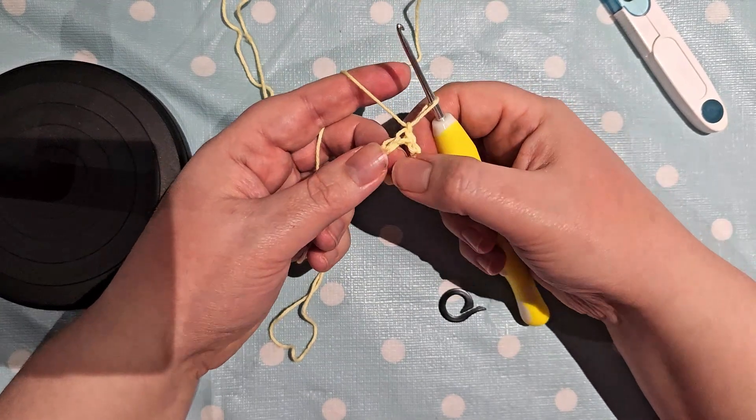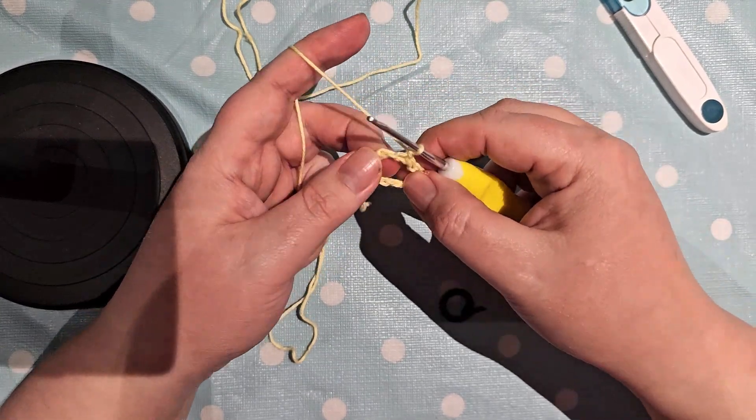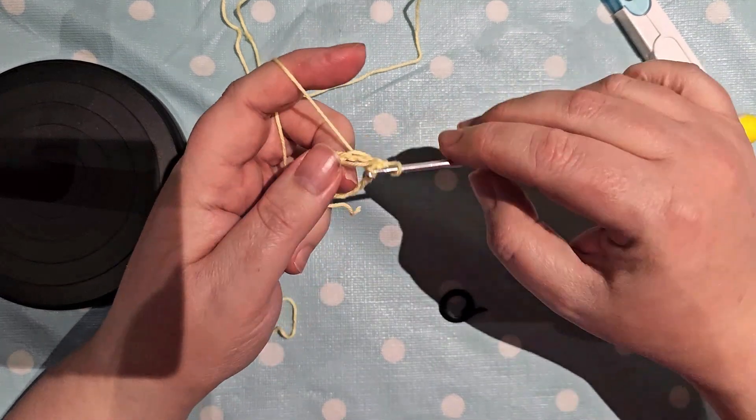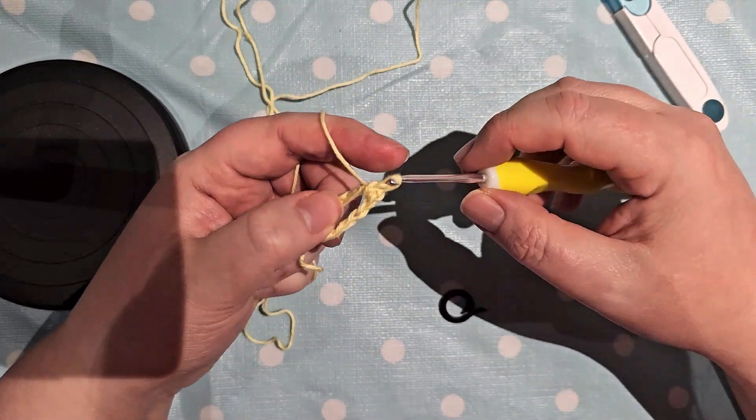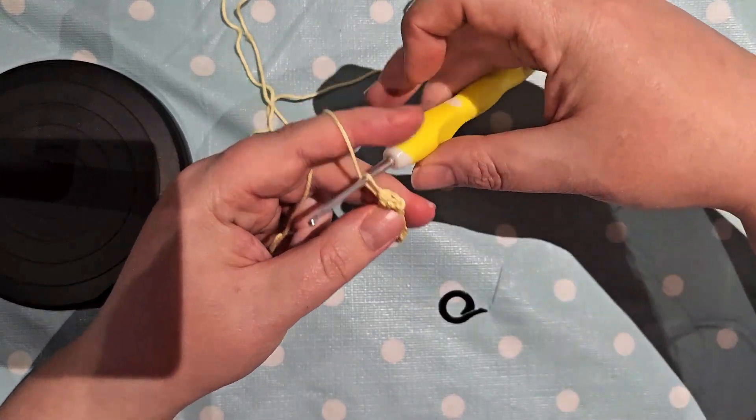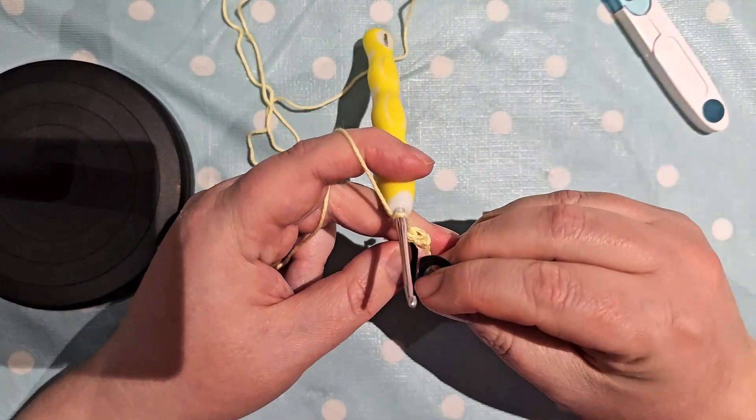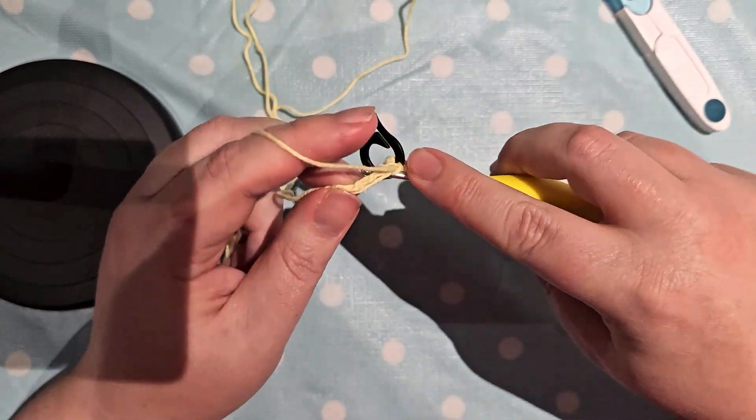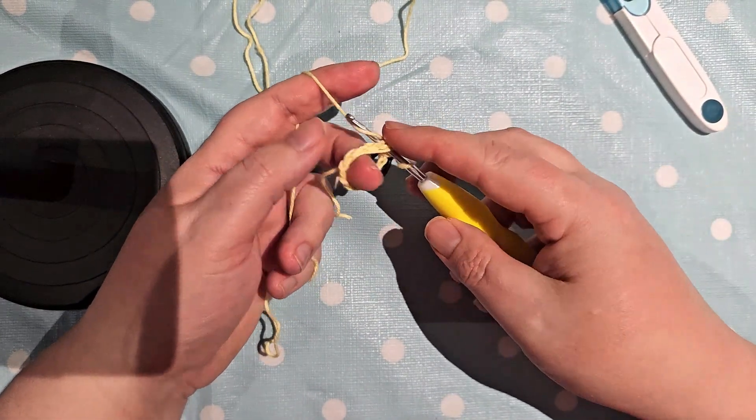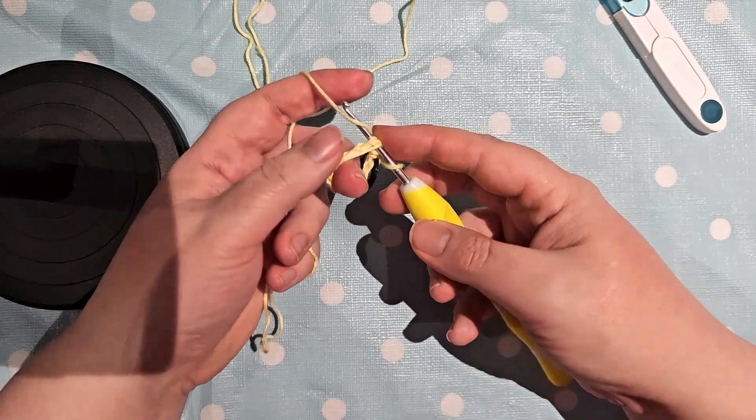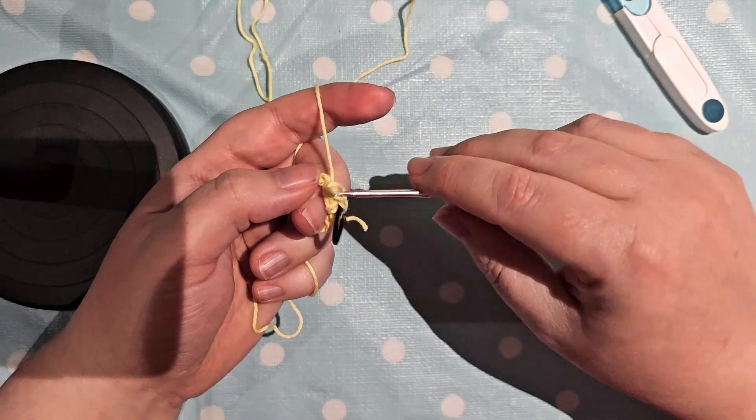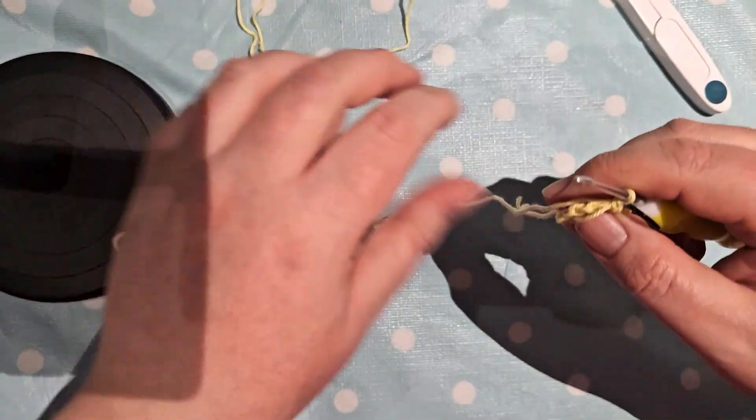We're going to work into the middle of this ring and we're going to do 15 single crochets. Sometimes I find it helpful to just mark the first one that you've done so that you know where the beginning is. And also make sure to work over the tail for this because that will help you tighten the ring a little bit if you need to.